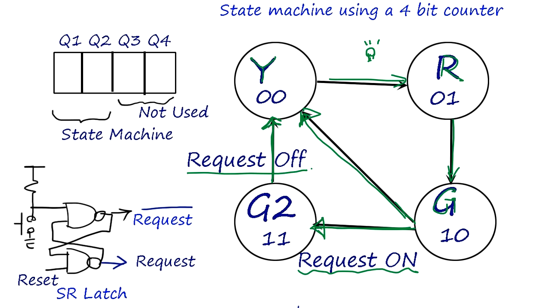We use a four bit counter. Q1 and Q2 are used - we don't need Q3 Q4 because we have only four states: 00, 01, 10, and 11. So this is a simple four bit state machine and these bits are not used. How do we handle the request? We have a request button.